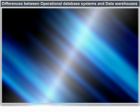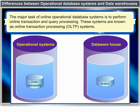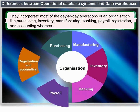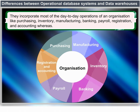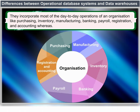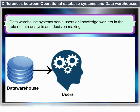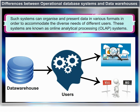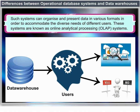The major task of online operational database systems is to perform online transaction and query processing. These systems are called Online Transaction Processing (OLTP) systems and cover most day-to-day operations of an organization such as purchasing, inventory, manufacturing, banking, payroll, registration and accounting. Data warehouse systems serve users or knowledge workers in the role of data analysis and decision making, organizing and presenting data in various formats to accommodate diverse needs. These systems are known as Online Analytical Processing (OLAP) systems.